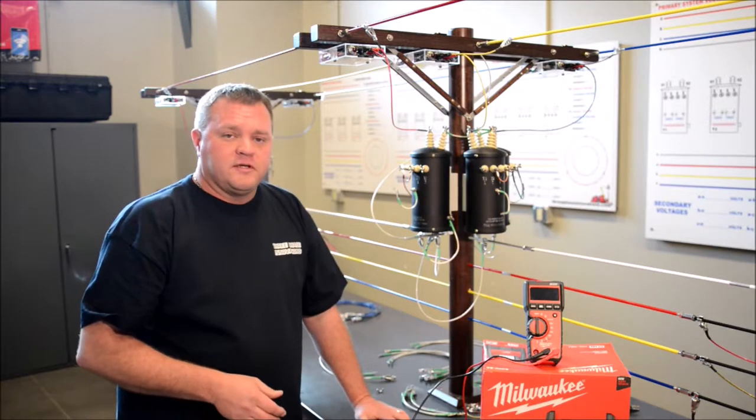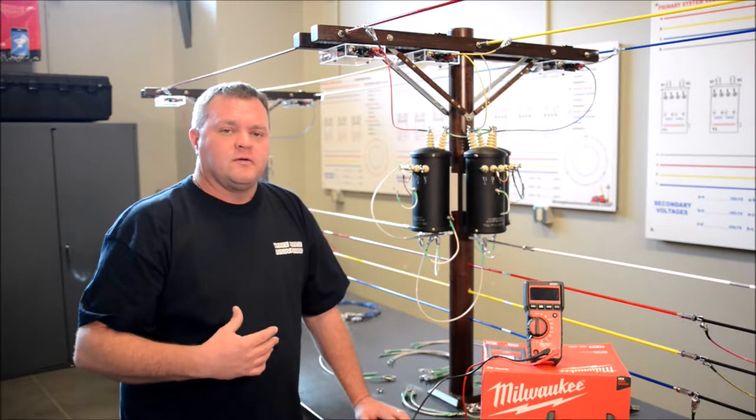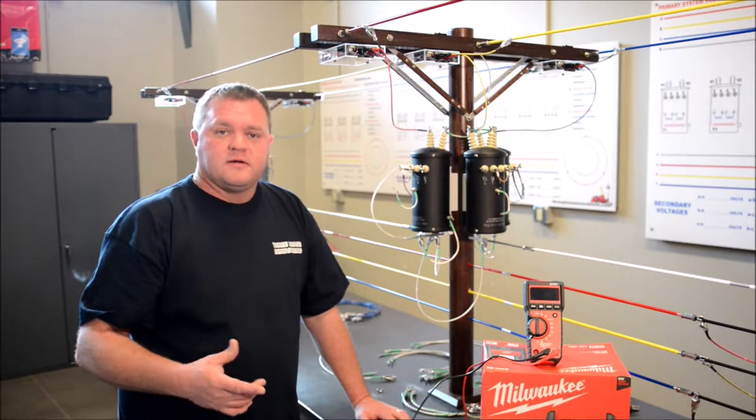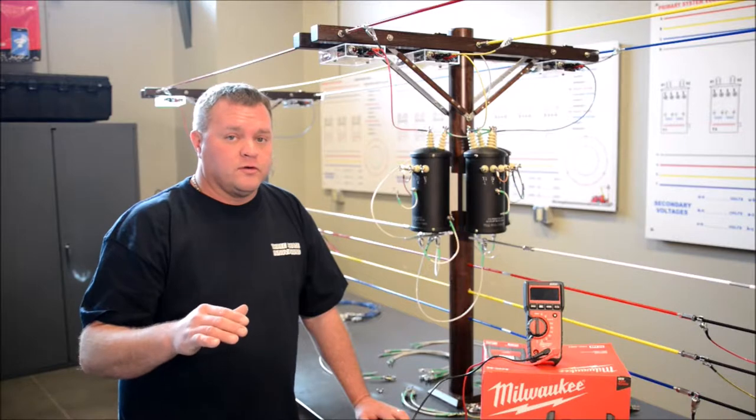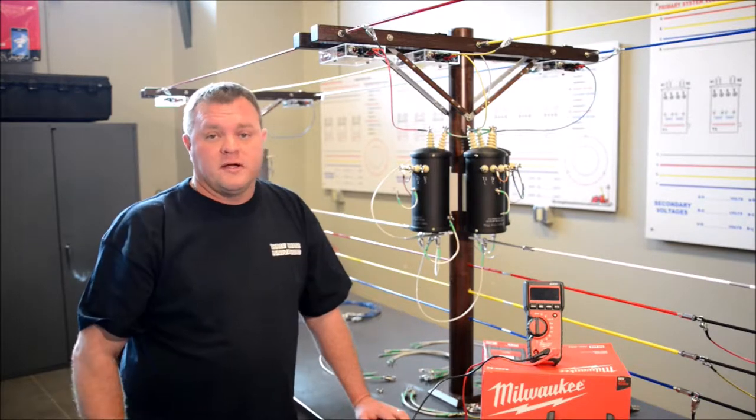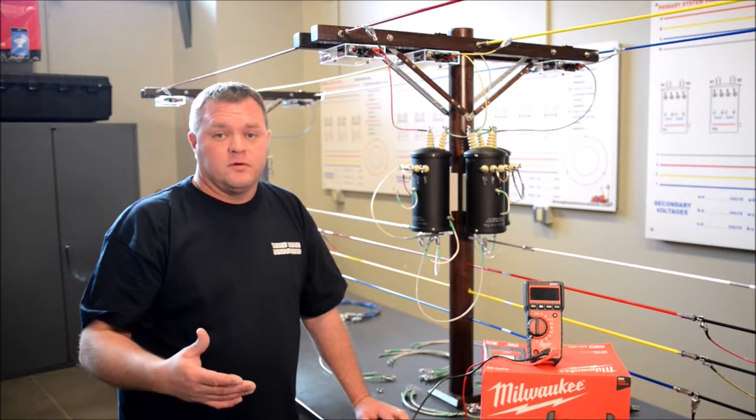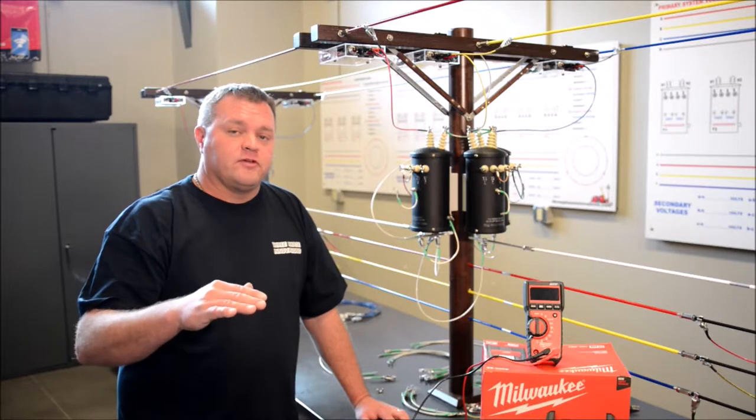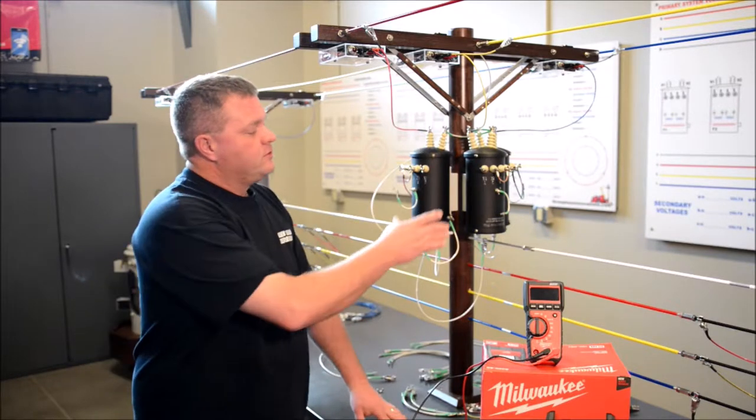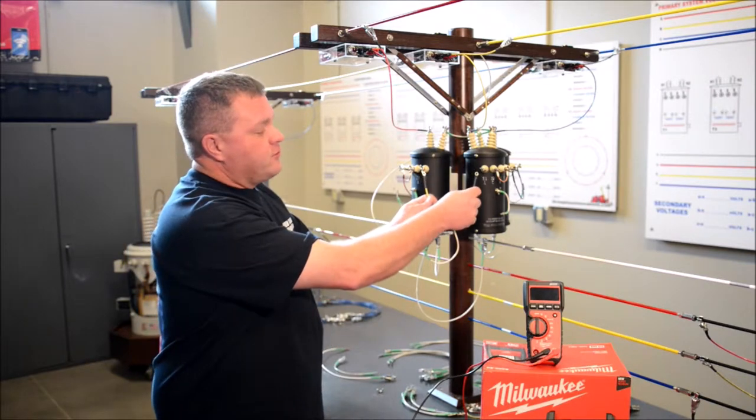The reason being is we've had a few situations where the lineman wired the bank and they checked the polarity on the nameplate and they were all good. The actual wiring of the bank was correct. When they energized the transformer bank, the bank blew up causing some injuries. So from that point on it was a standard test procedure to test right here before we actually close the circuit.